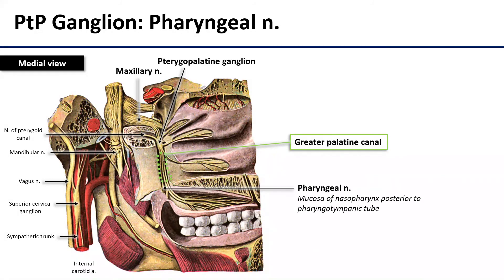Finally, the pharyngeal nerve is a tiny branch that supplies the mucosa of the nasopharynx just posterior to the pharyngotympanic tube. It also travels inferiorly from the pterygopalatine ganglion through the greater palatine canal, but heads even further posteriorly than the lesser palatine nerve to reach that region of the nasopharynx.